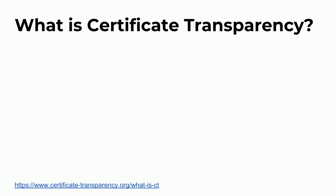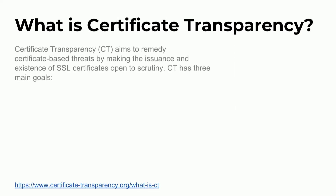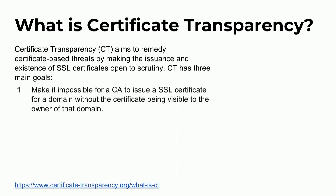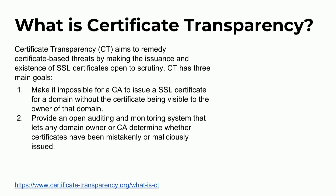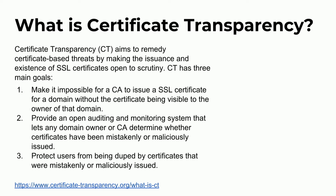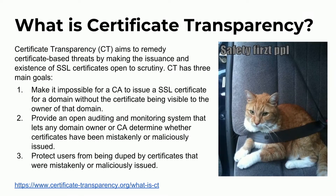Now we come to certificate transparency. It's a project started by some really smart folks at Google to solve this problem. It tries to remedy certificate-based threats by making the issuance of certificates more open to scrutiny and more auditable. It has three main goals: first, make it impossible for a CA to create a certificate for google.com without Google knowing; second, make the issuance of certificates a matter of public record that everyone can audit; and ultimately, protect users so that the green lock icon in their browser actually means something.